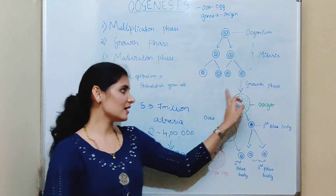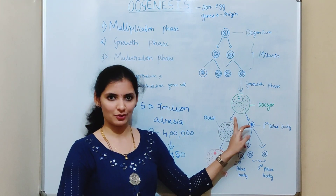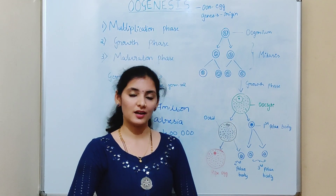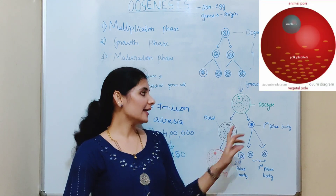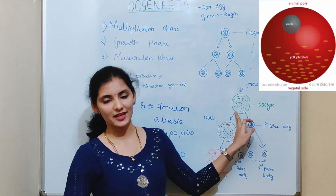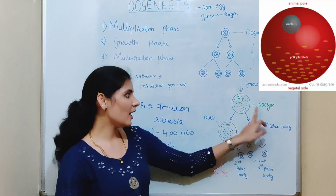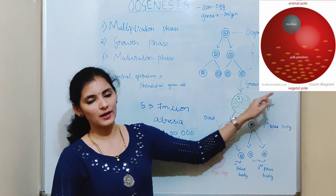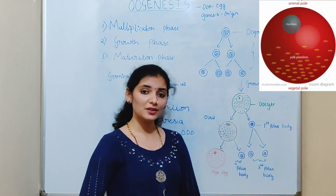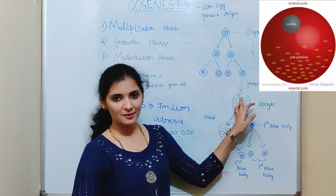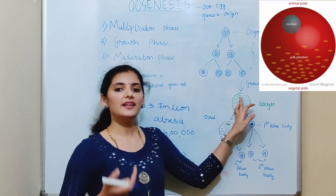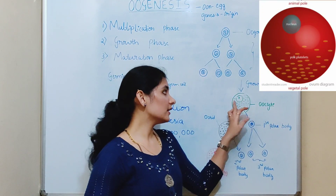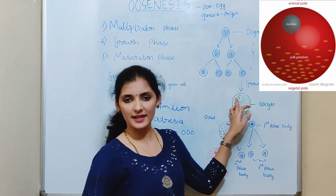During the growth phase, there is an increase in the size of the primary oocyte due to accumulation of protein and fat to form a yolk. Due to the heavy nature of the yolk, it accumulates in the lower portion of the primary oocyte to form a vegetative pole, while the nucleus along with the cytoplasm occupies the upper region to form an animal pole. During the growth phase, the cytoplasm in the animal pole becomes rich in DNA, RNA, enzymes, proteins, and all organelles start to accumulate there.